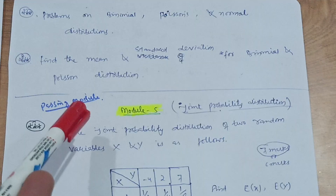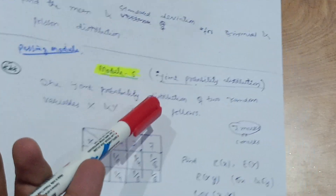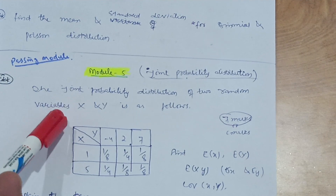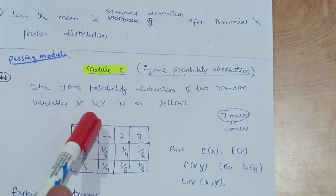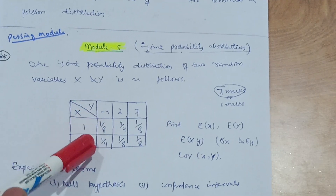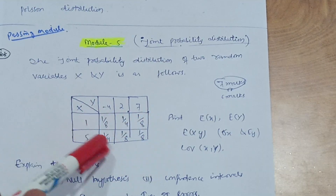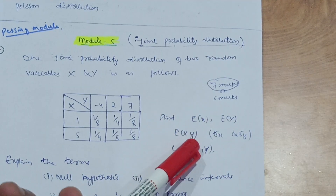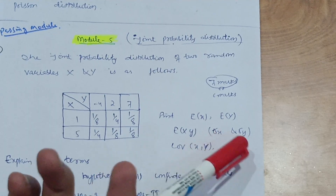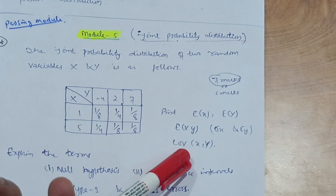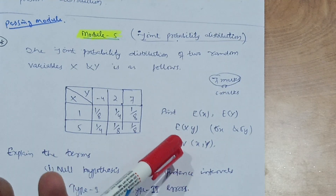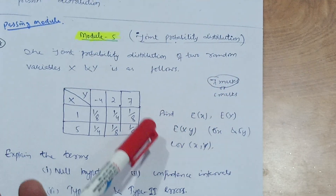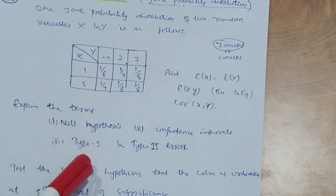Module 5 is also a passing module — joint probability distribution. A typical first question will be: the joint probability distribution of two random variables X and Y is given as a table, with example values like x and y at -4, 2, 7. You have to find E(X), E(Y), E(XY), standard deviations σx and σy, and the covariance of (X, Y). This carries six to seven marks — practically guaranteed marks.